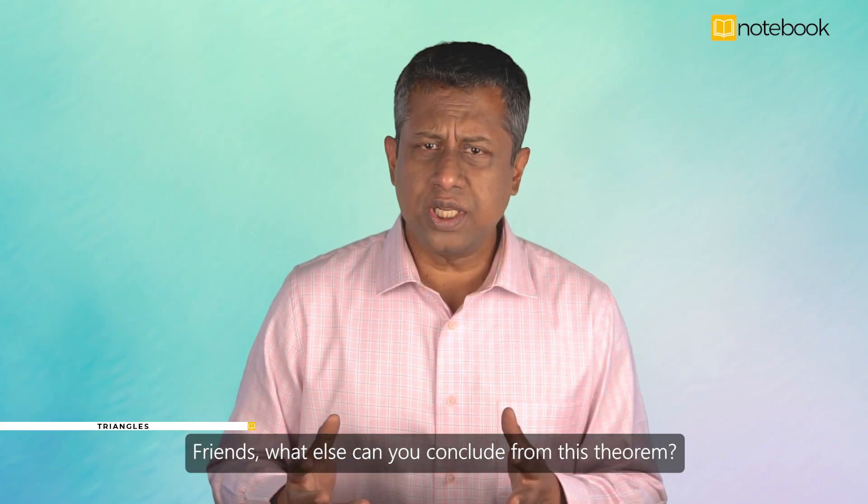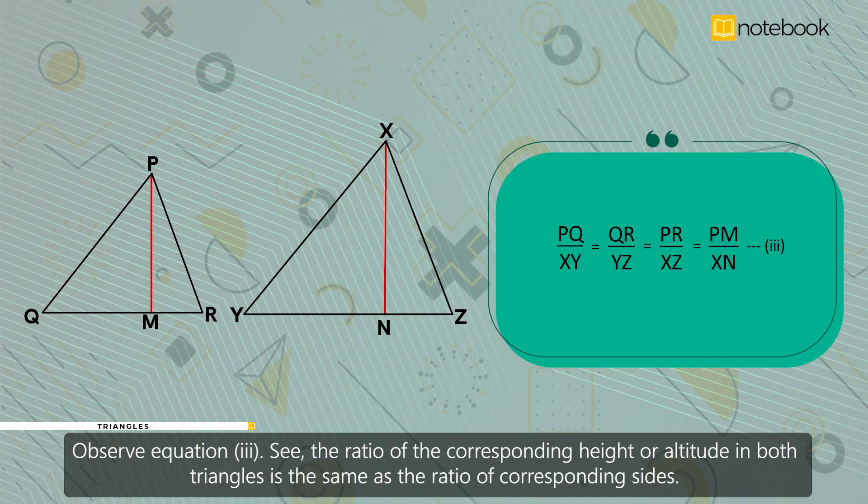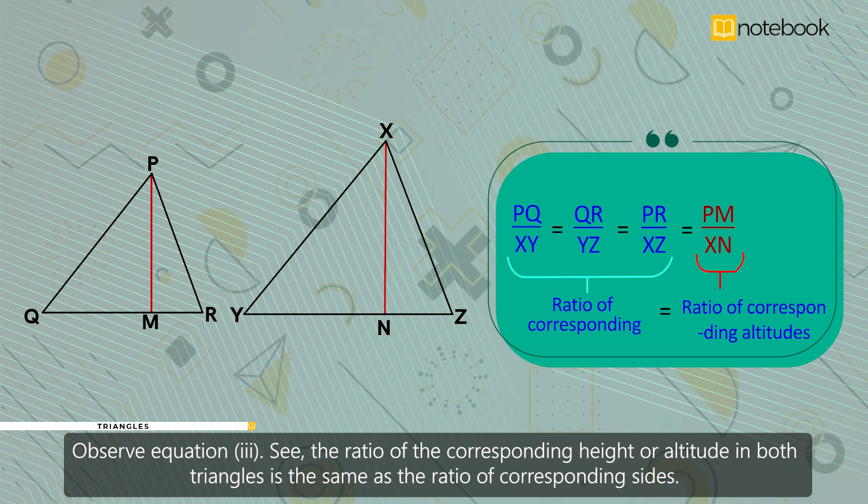Friends, what else can you conclude from this theorem? Observe equation 3. See the ratio of the corresponding height or altitude in both triangles is the same as the ratio of the corresponding sides.